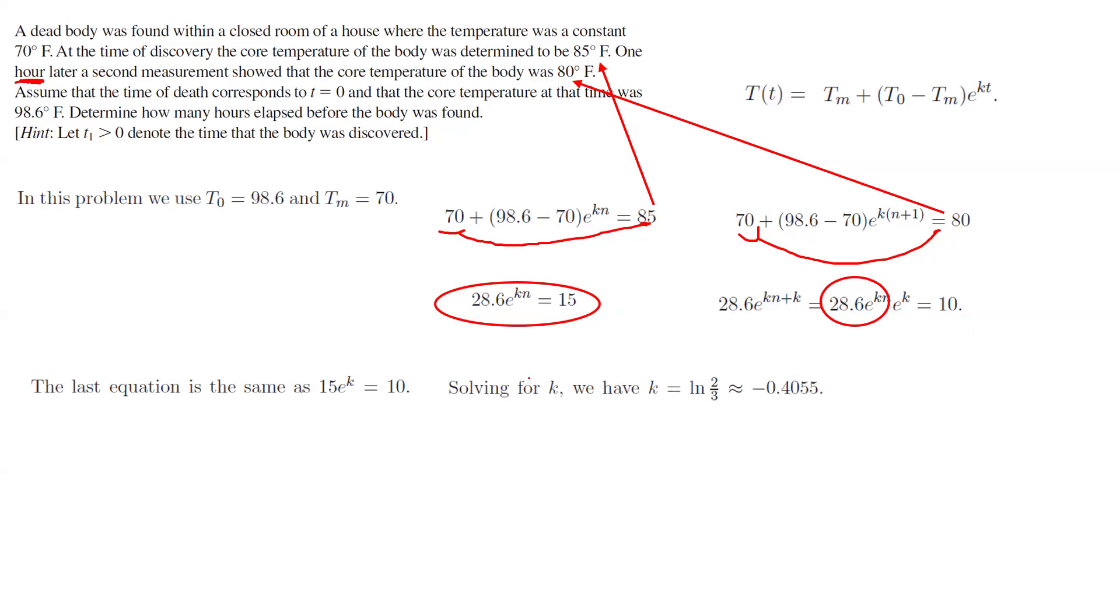Well, it means that e to power K is 10 divided by 15, or K is ln of 10 divided by 15, or 2 thirds. Use your calculator, and it's approximately negative 0.455. So basically, e to power negative 0.455n is equal to 15 divided by 28.6. We're just using this equation here. You already know what K is. Plug in K here, and then divide everything by 28.6. e to power Kn is 15 over 28.6.